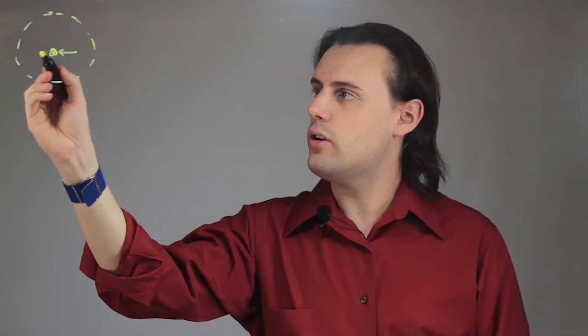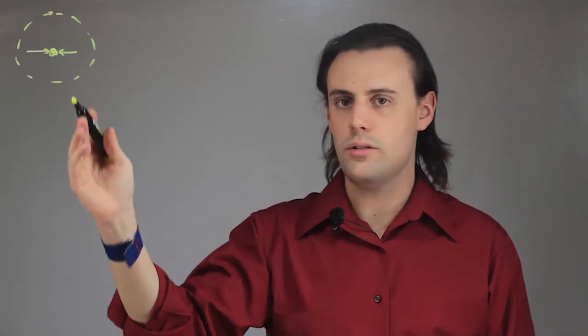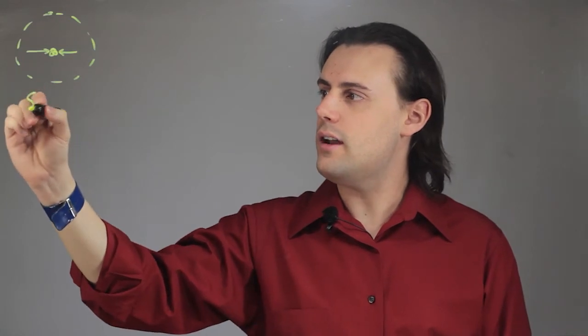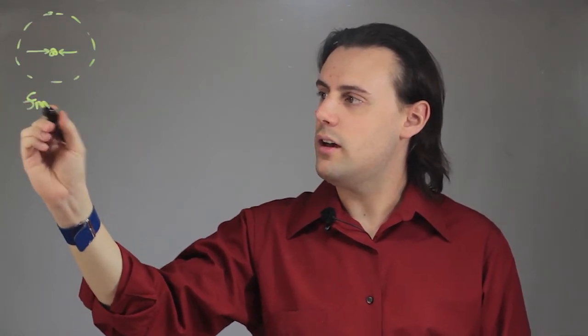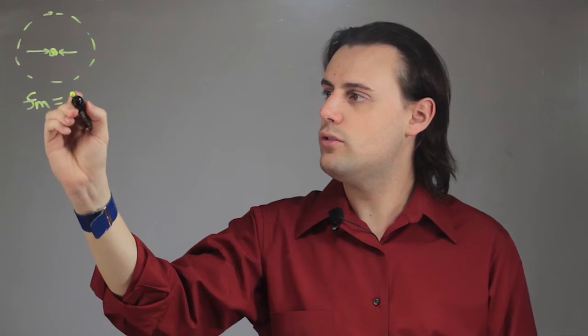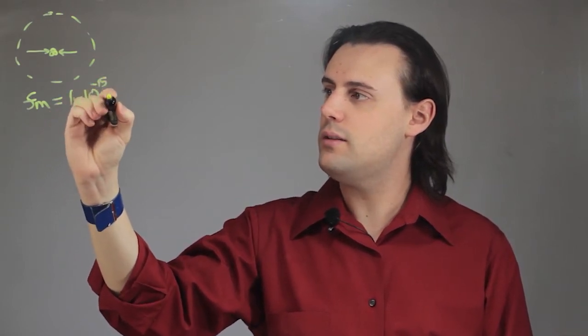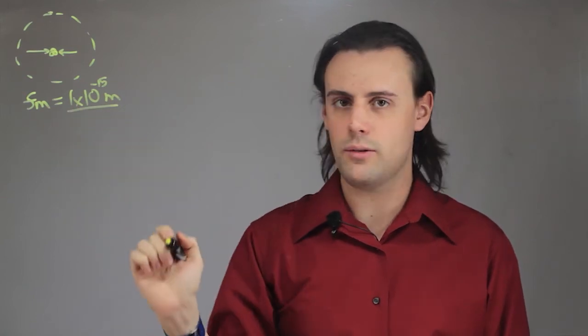So the order of magnitude, or length scale, of the size of the nucleus is that of a femtometer. A femtometer is equal to 1 times 10 to the minus 15 meters. So that's really, really tiny.